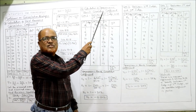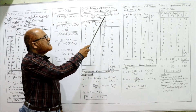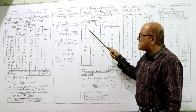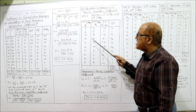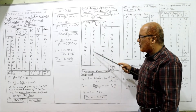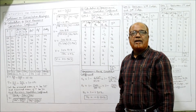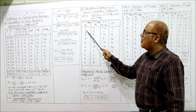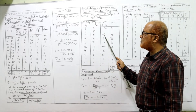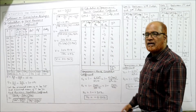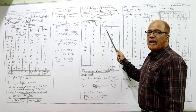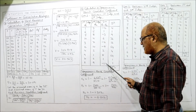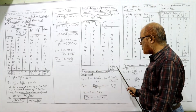Case 1: Spearman's rank correlation coefficient between Judge 1 and Judge 2. Judge 1 ranks: 1, 6, 5, ... and Judge 2 ranks: 3, 5, 8, 4, ... d = R1 − R2: 1−3=−2, 6−5=1, 5−8=−3, 10−4=6, and so on. Now square the differences: (−2)²=4, 1²=1, (−3)²=9, 6²=36, 4²=16, 8²=64, 2²=4, 8²=64, 1²=1. Summation d² = 200.